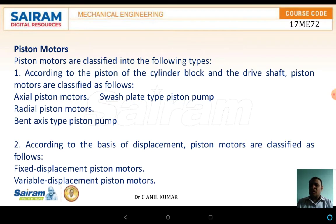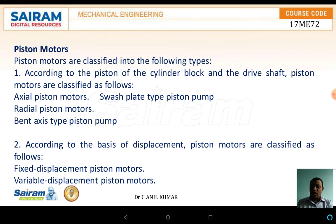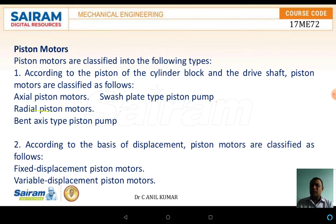The next topic is piston motors. The piston motors are classified into the following types. According to the position of the cylinder block and the driver shaft, the motors are classified as axial piston motors, swash plate type piston motors, radial piston motors, and bent axis type piston motors. According to displacement, they are classified into fixed displacement motors and variable displacement motors.